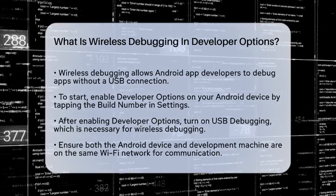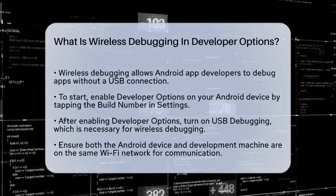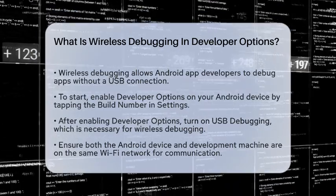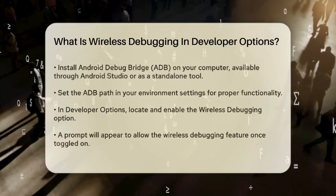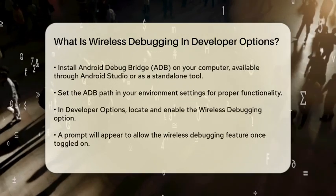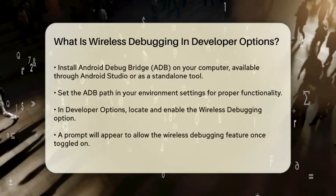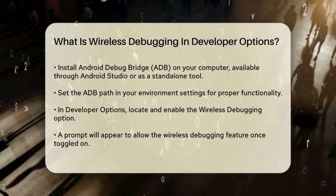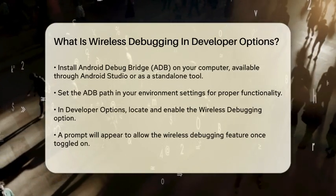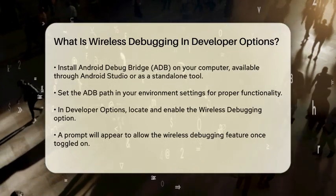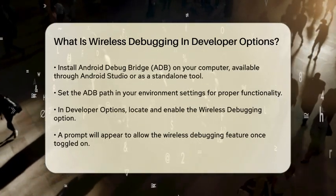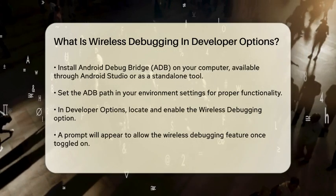Once you have developer options enabled, you need to turn on USB debugging. Yes, you read that right. Even though you're not using a USB connection, USB debugging is still necessary for wireless debugging to work.